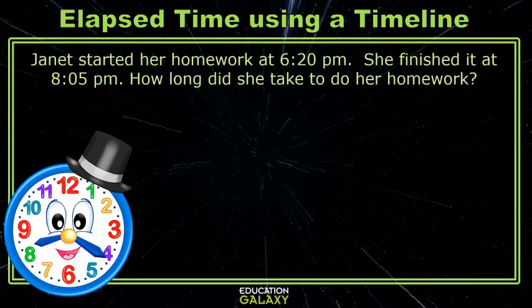One way to figure out elapsed time is to use a timeline. Let's try it on this problem. Janet started her homework at 6:20 p.m. She finished it at 8:05 p.m. How long did she take to do her homework?